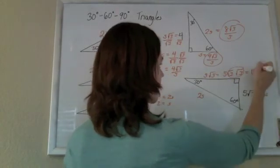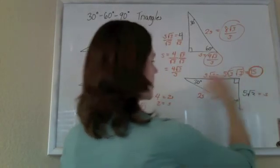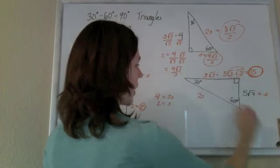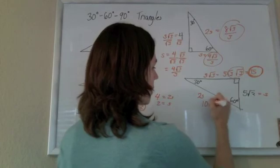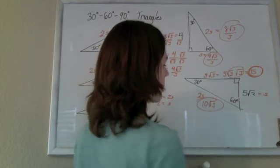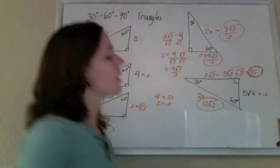So this side here is 15. And the hypotenuse is just twice S. So twice 5 root 3, so 10 root 3. And that's that.